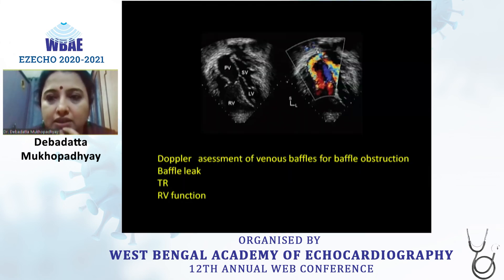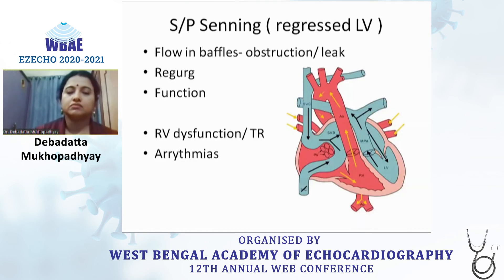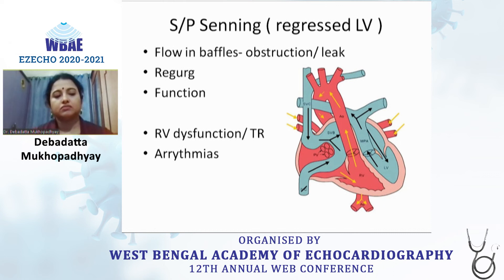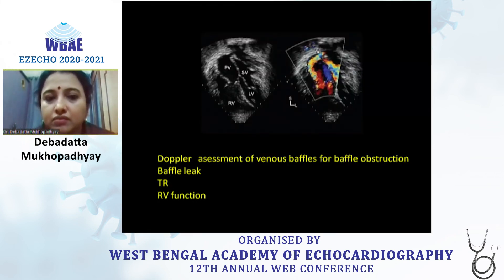On echo assessment post-Senning/Mustard surgery, the main things to be seen are any baffle obstruction — because apart from arrhythmias, baffle obstruction whereby outflow and inflow into the pulmonary and systemic baffles may be obstructed is the major concern, as cardiac output must be maintained. Baffle leaks are the other factor to assess, which can drop the inflow part. Apart from obstruction and baffle leak, baffle courses must be properly traced, and any AV valve regurgitation should be identified since there may be a valve abnormality associated in these scenarios.